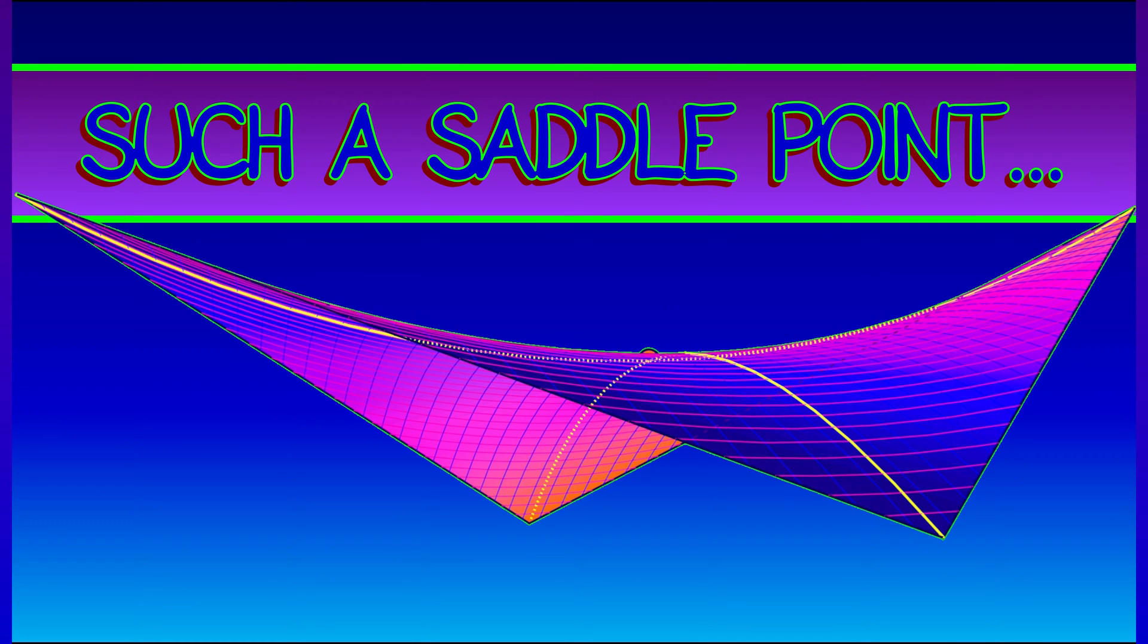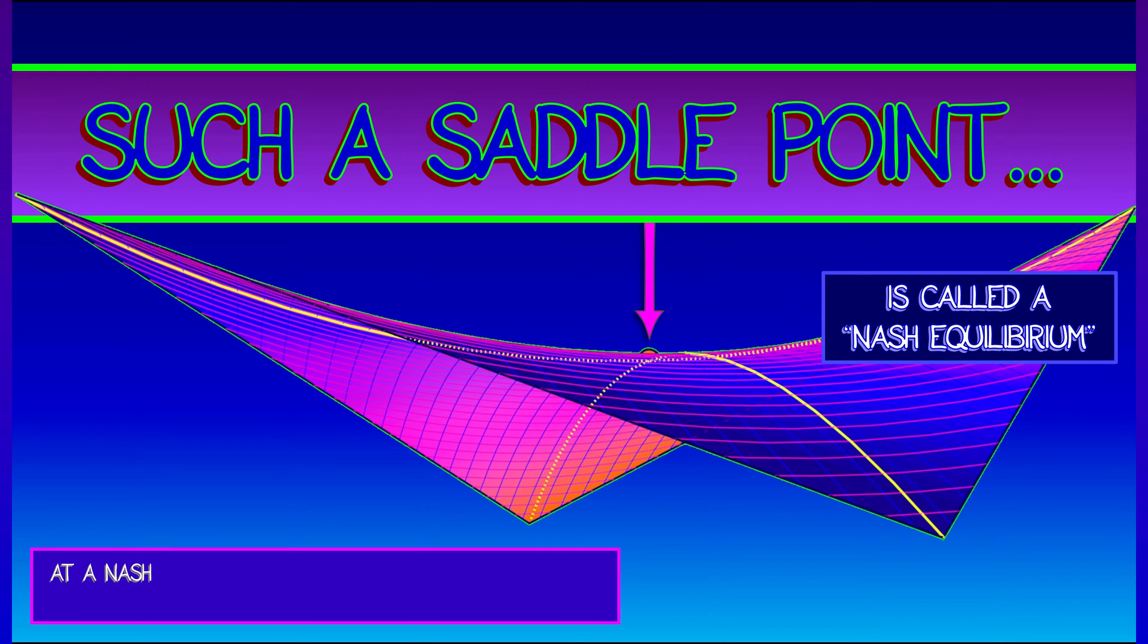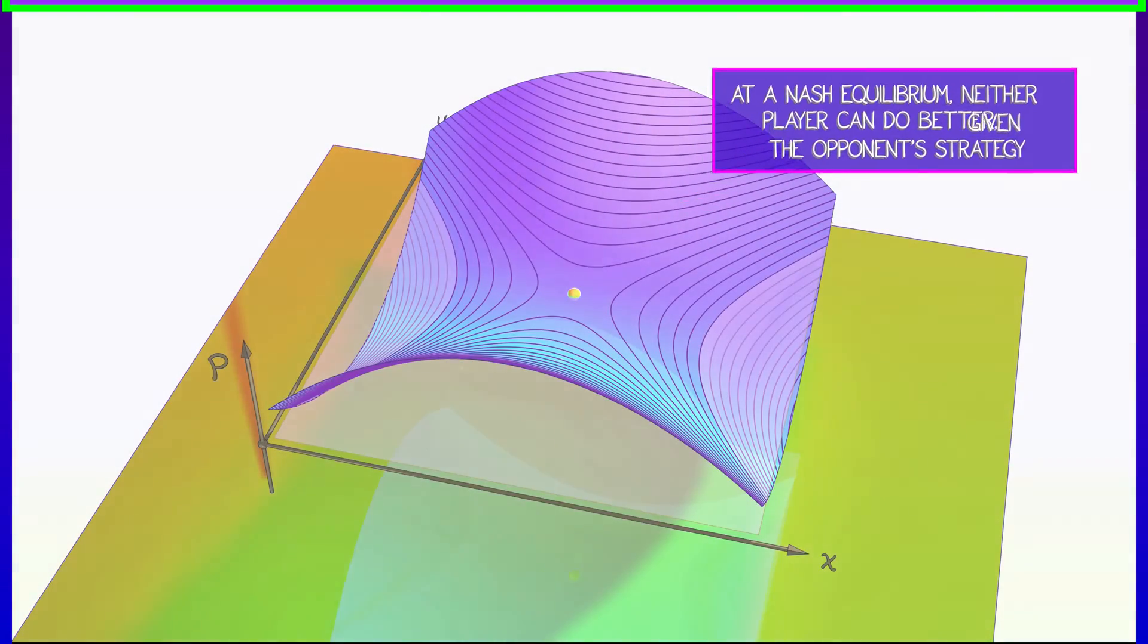Now such a saddle point has a special name. It is called a Nash equilibrium, and it is so important. Why? Because at a Nash equilibrium, neither player can do any better fixing the opponent's strategy. What does this mean?